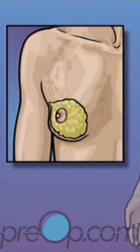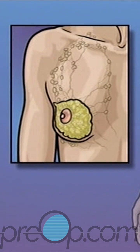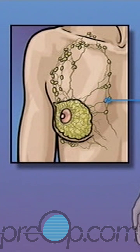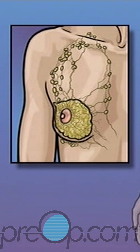Lymph nodes are small junctions that join the vessels that make up the lymphatic system. The lymphatic system circulates a bodily fluid called lymph in the same way that the circulatory system carries blood.